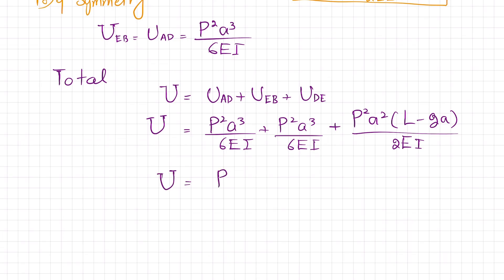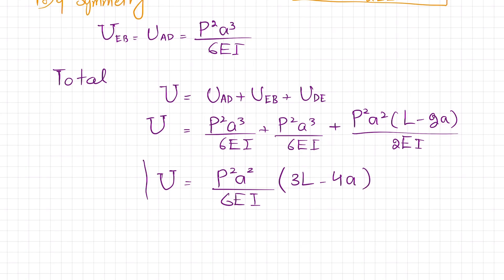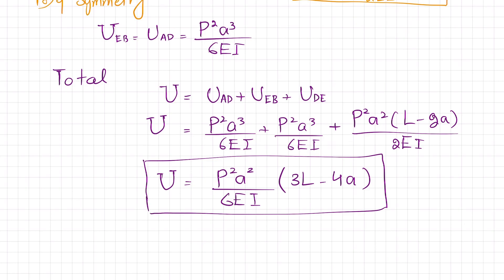Combining terms: P²A³ over 6EI plus P²A³ over 6EI plus the expanded DE term gives a final total strain energy of P²A³ times (3L minus 4A) divided by 6EI. This is the answer to problem 11.27.